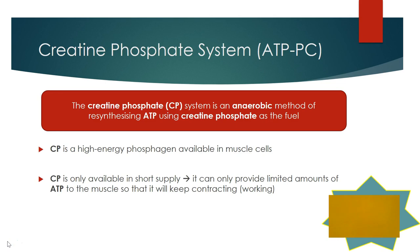There are two anaerobic methods used by the body for resynthesizing ATP to create and supply energy. One uses a chemical called creatine phosphate, which is the creatine phosphate system, and the other is the lactic acid system, which uses carbohydrates as its fuel.